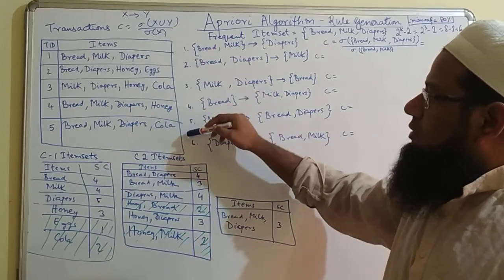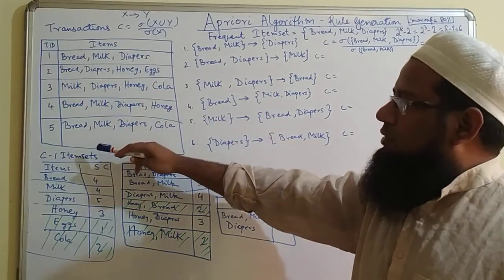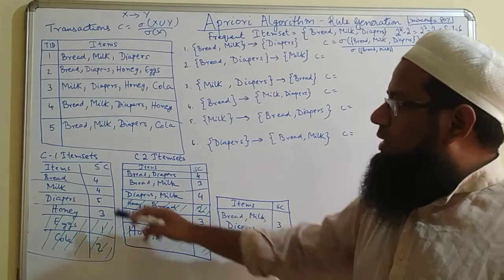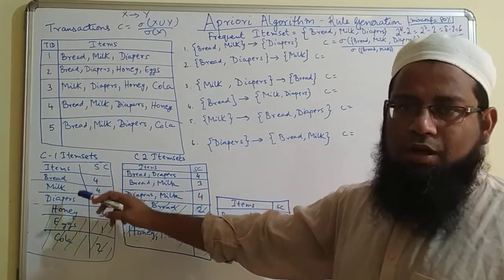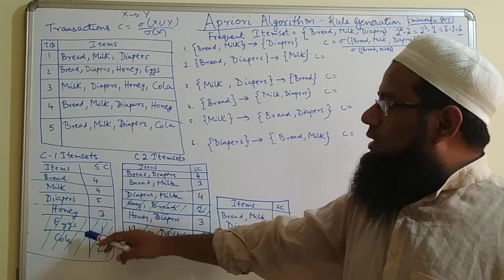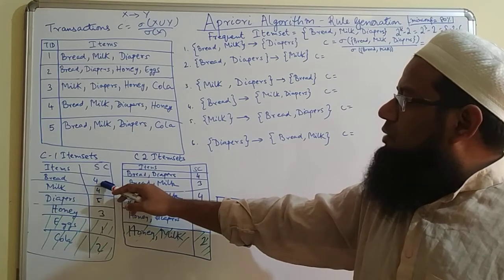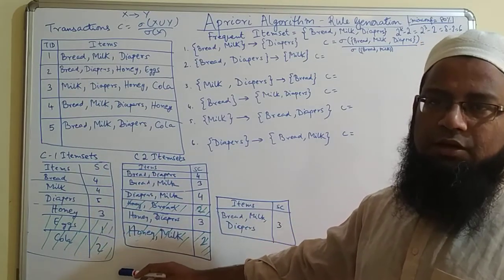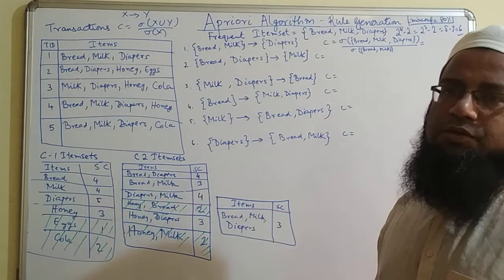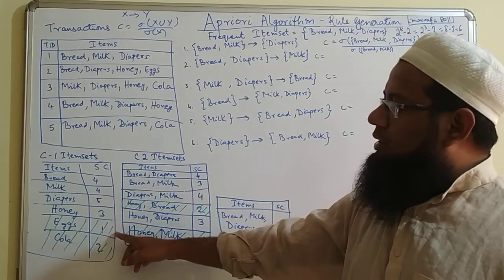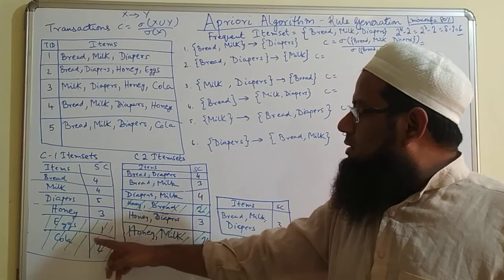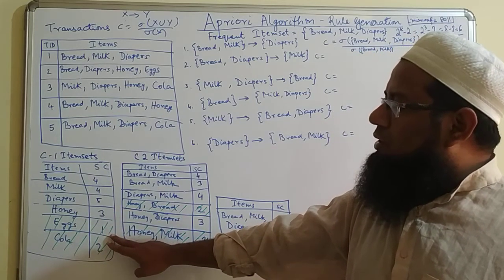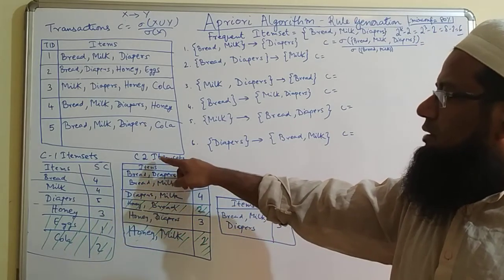We had transaction data with five transactions, and each transaction has certain items. Using the Apriori algorithm, we found the candidate one-item set. The items are bread, milk, diapers, honey, egg, and cola, and we calculated the support count — for example, bread is four. The minimum support we took was three, so any item with less than three has to be removed. Eggs had a support count of one and cola had a support count of two, so these two items were removed and not considered when forming the candidate two-item set.